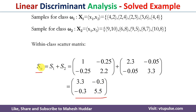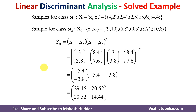Once we have the within-class scatter matrix, the next step is to calculate the between-class scatter matrix Sb, using the equation: Sb equals (mu1 minus mu2) multiplied by (mu1 minus mu2) transpose. Since we know mu1 and mu2, we can substitute those values to get Sb.